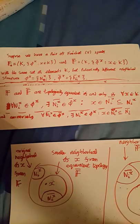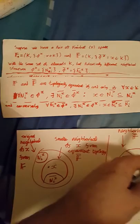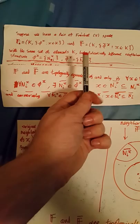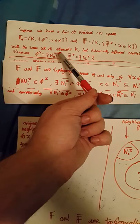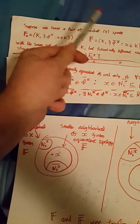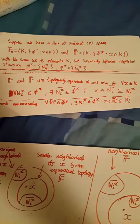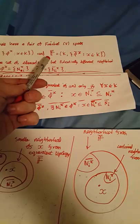Before defining topological equivalence, I want to make two assumptions. First, each element X belongs to each of its own neighborhoods — so every neighborhood of an element contains that element, in both F and F-bar. Second, every element X in K belongs to at least some neighborhood, again in both Fréchet spaces F and F-bar.